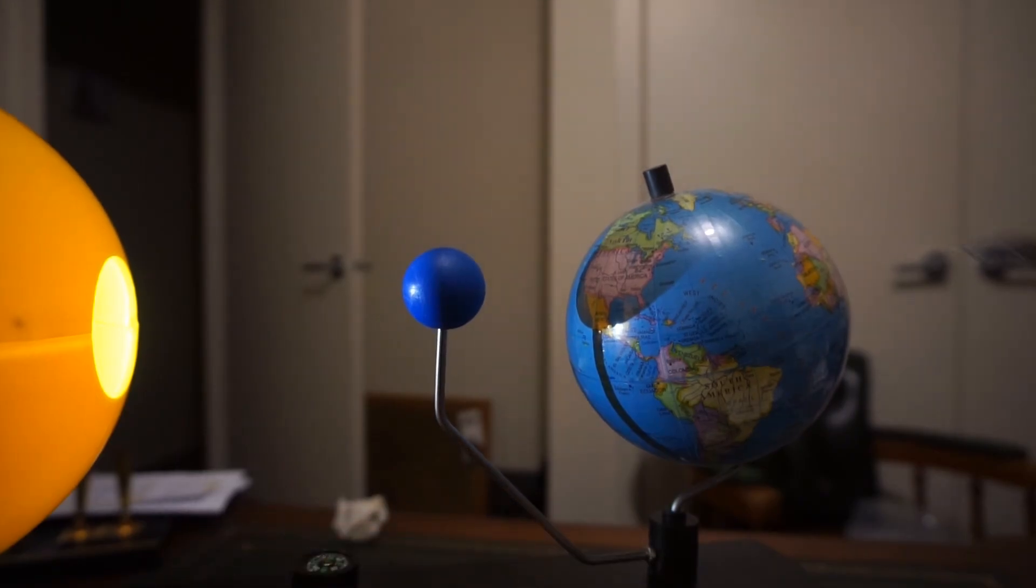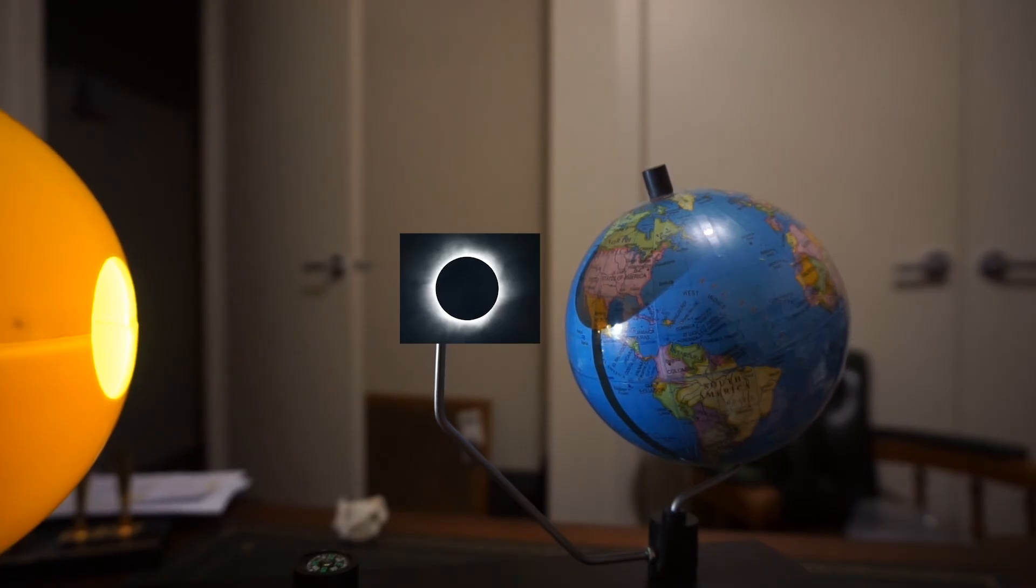And if you're in that area, if you're in that shadow, you experience what's known as a solar eclipse, where the Moon is blocking all of the sunlight, and you get temporary darkness.